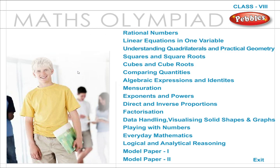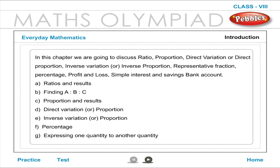Maths Olympiad Class 8 Everyday Mathematics. In this chapter, we are going to discuss Ratio, Proportion, Direct Variation or Direct Proportion, Inverse Variation or Inverse Proportion, Representative Fraction, Percentage, Profit and Loss, Simple Interest, and Savings Bank Account.